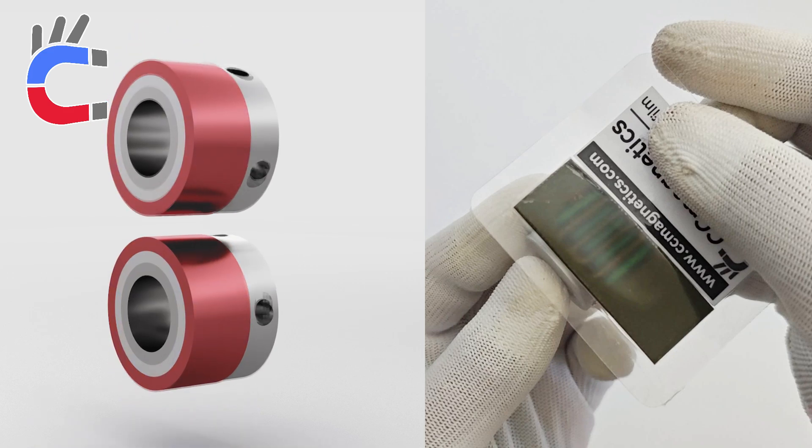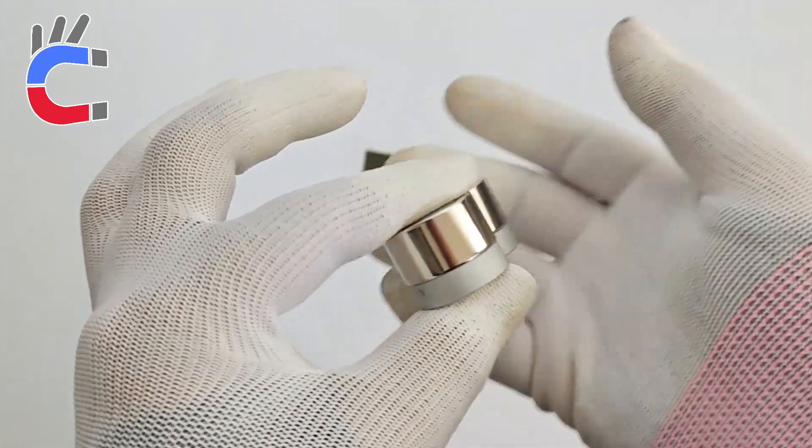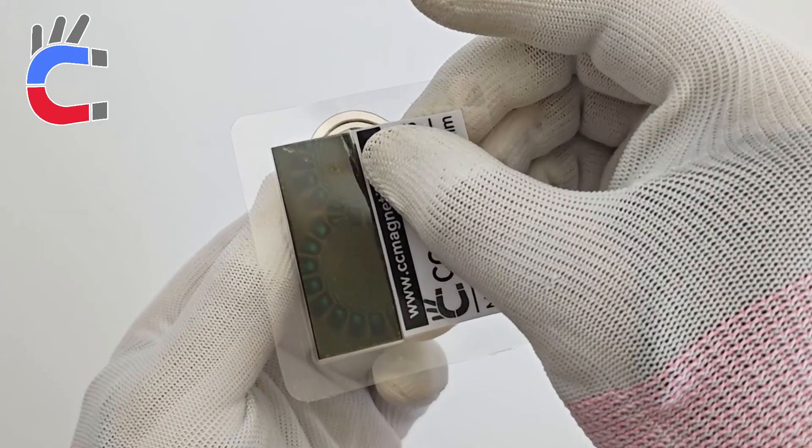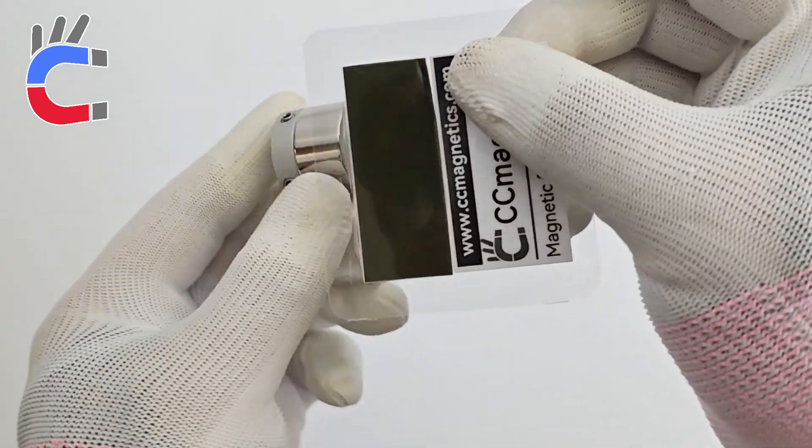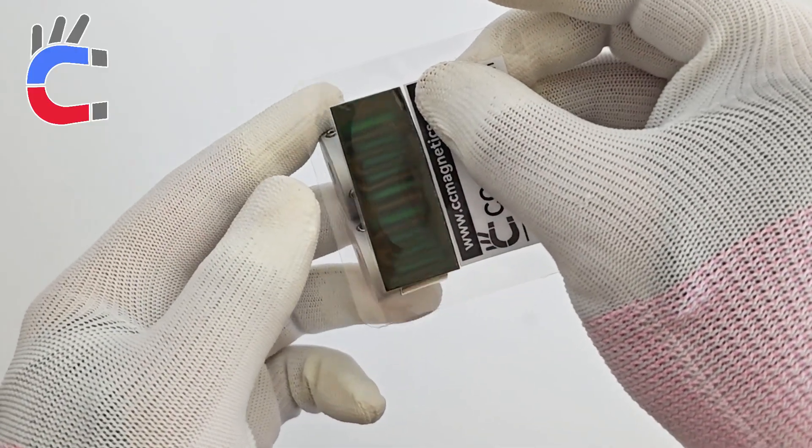With an ideal magnetic pole count of around 10, these gears ensure stable torque transmission. Increasing the number of poles enhances smoothness but reduces torque.